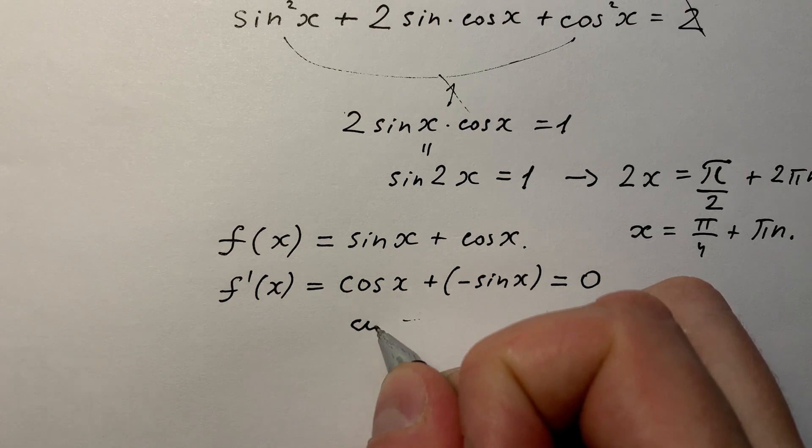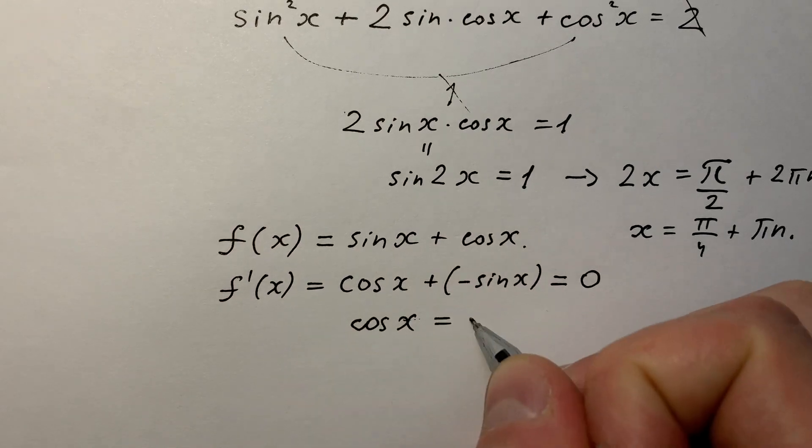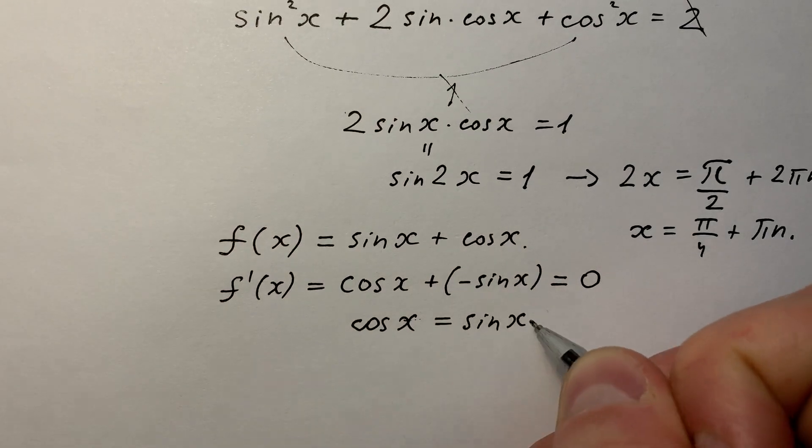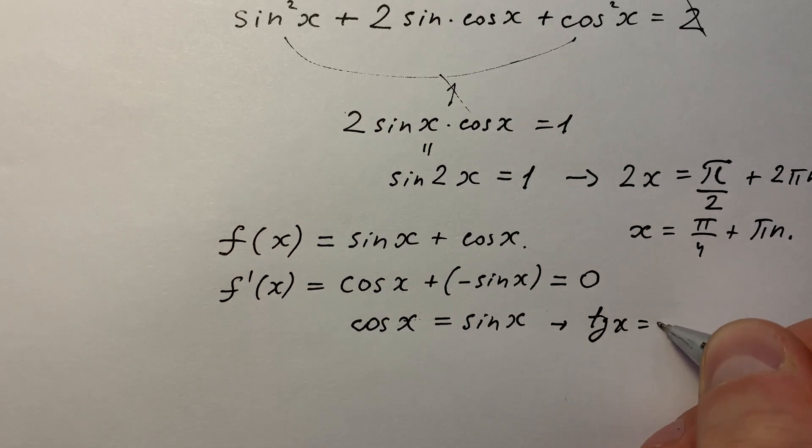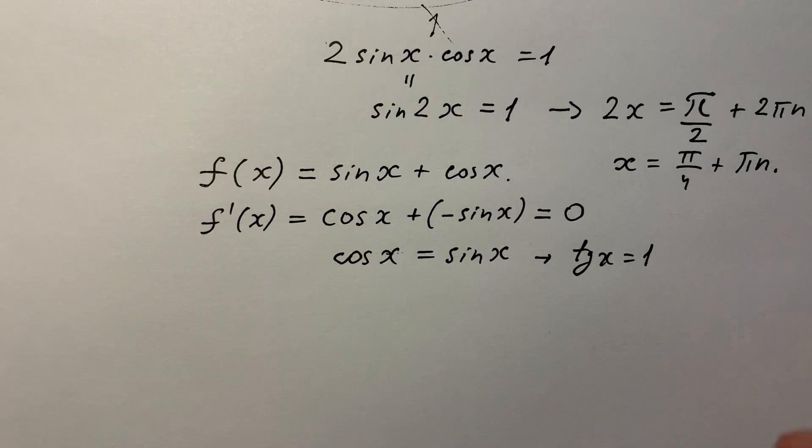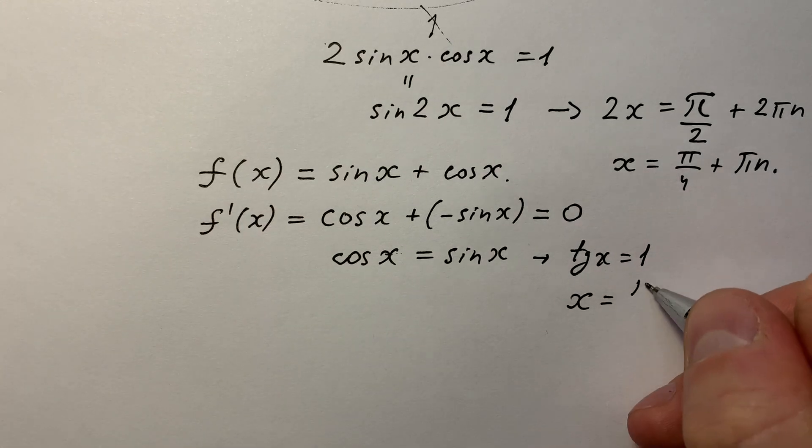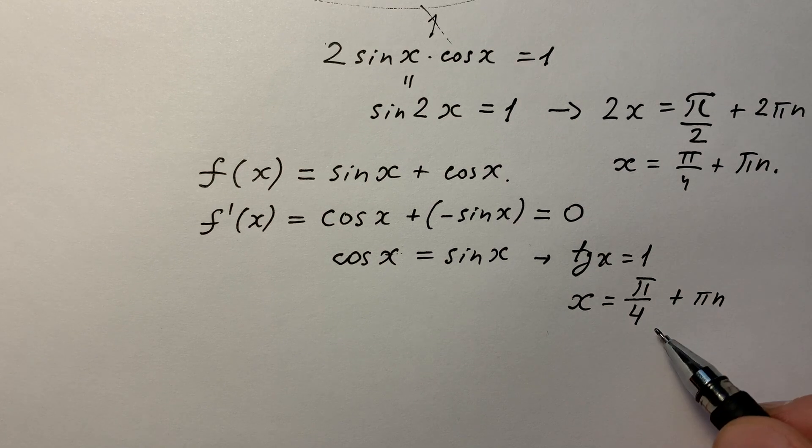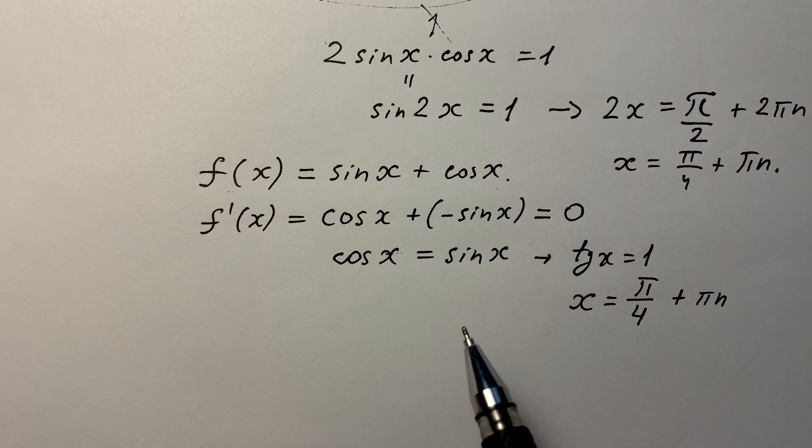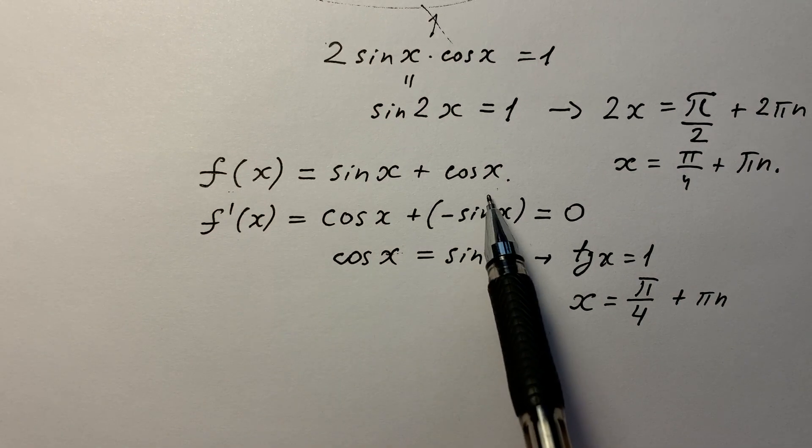We can see that cos(x) equals sin(x). It means that tan(x) equals 1, and it can take place when x equals π/4 + πn. Look at this: this function takes a maximum value at x equals π/4 + πn.